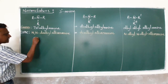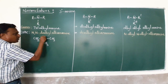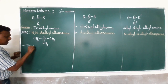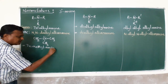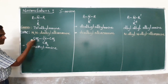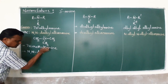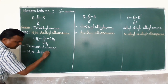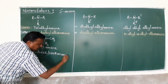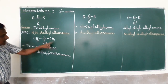Let us consider the example: (CH3)3N, where all three groups are methyl. The common name is trimethylamine. For the IUPAC name, we take two methyl groups as N,N-dimethyl, and the parent chain is methane, giving us N,N-dimethylmethanamine.